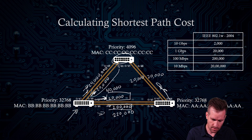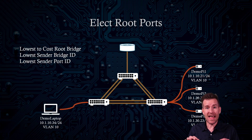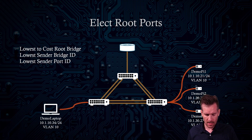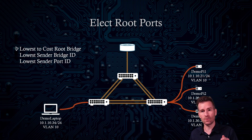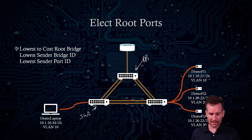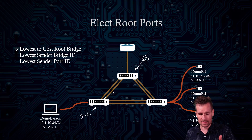Switch two is obviously going to prefer the 20,000 link over the others — it wants the shortest path, the least cost to the root bridge. Each switch elects a root port: the port it will use to forward traffic towards the root bridge. In this case, the lowest cost path is clearly identified, so that port is elected as the root port.